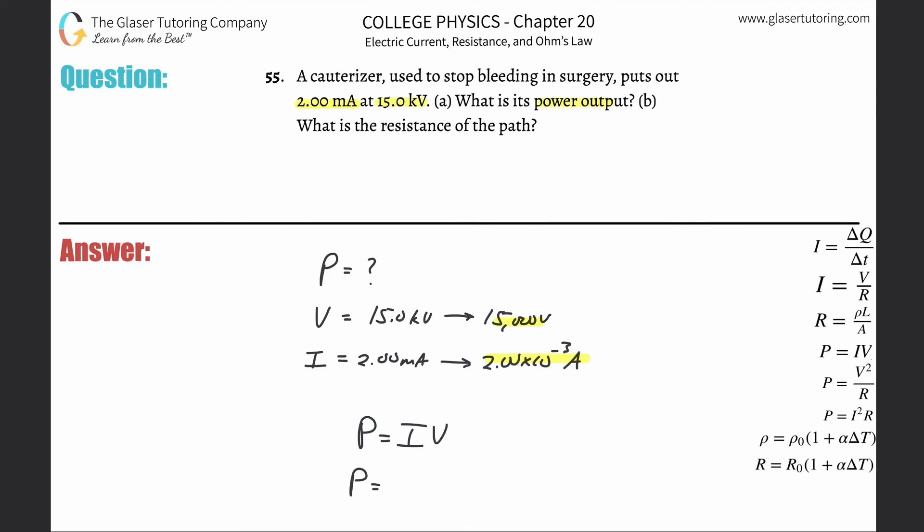So power will simply be equal to now 2.00 times 10 to the minus 3, multiplied by then the volts of 15,000. So take out that handy-dandy calculator. 2 times 10 to the minus 3 multiplied by 15,000. 30, 30 watts.